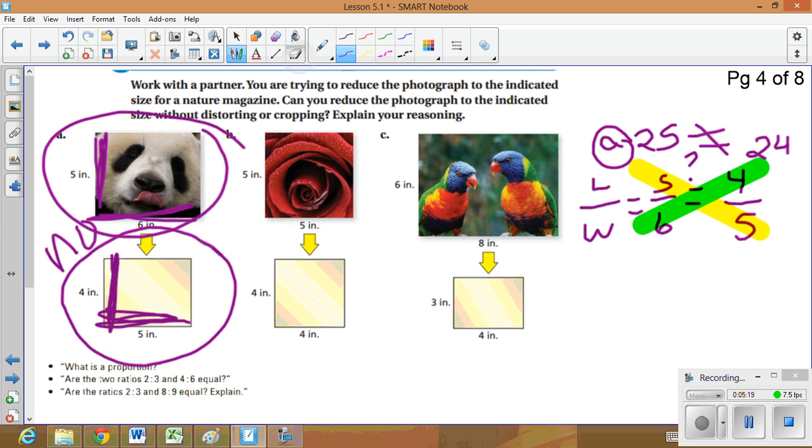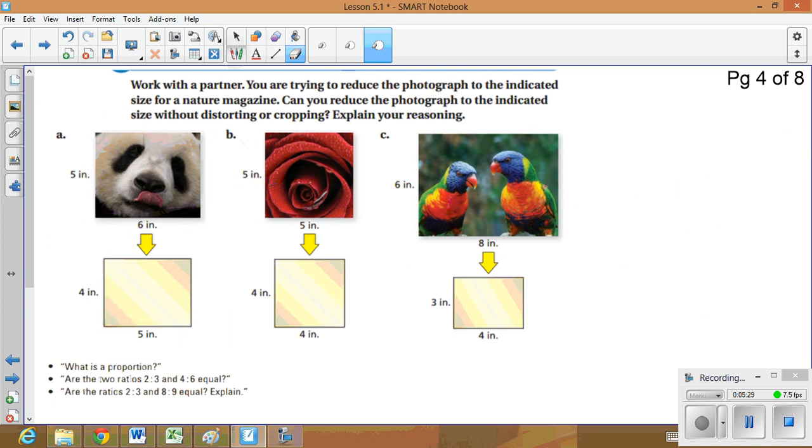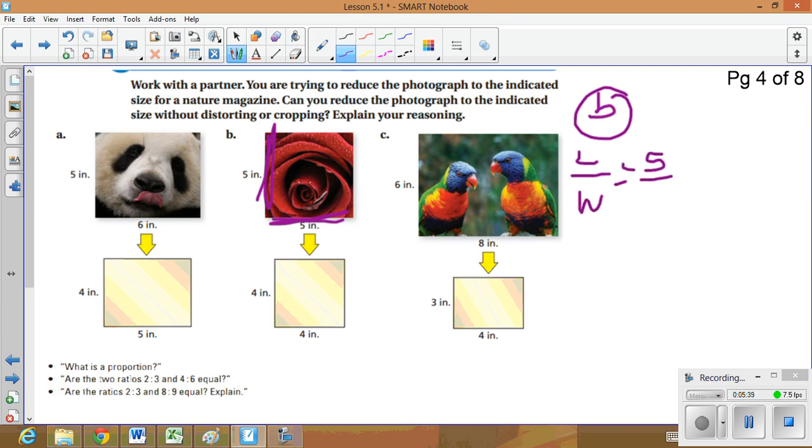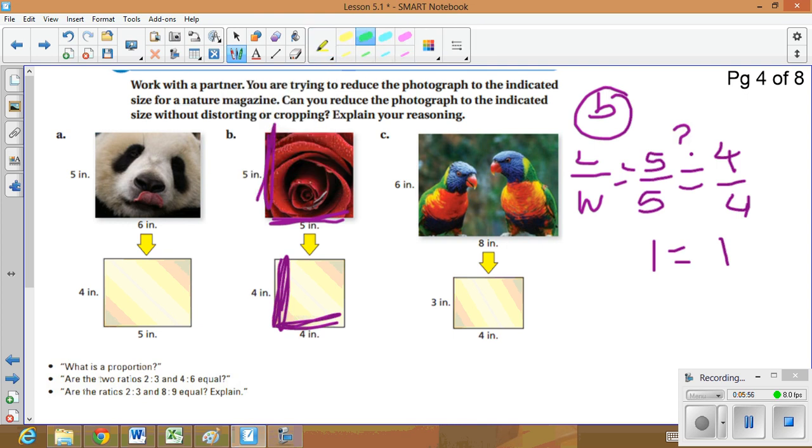Alright, I am going to erase all the work for part A. So if you still need anything, rewind back a bit and pause. Alright, for part B, for this rose, I have a 5 by 5. So I'm comparing length to width. 5 by 5 for the rose. And I want to see if it's proportionate to 4 by 4. And I hope you can tell that 5 over 5 is 1. 4 over 4 reduces to 1. Or again, we can do what we did in the previous example. 5 times 4 is 20. 4 times 5 is 20. So 20 equals 20. So the answer for number 2, or letter B, is yes.